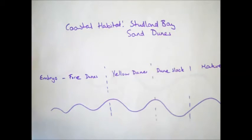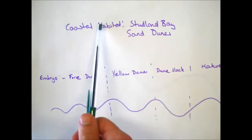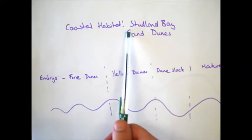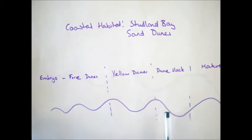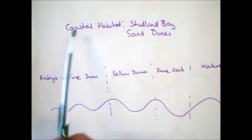The final coastal case study we want to look at is an example of a coastal habitat. Be careful, they're very unlikely to ever use the term sand dunes as there's a choice in this part of the unit. At Durrington, we choose to do Studland Bay sand dunes. In the exam, they're probably going to use the term coastal habitat.